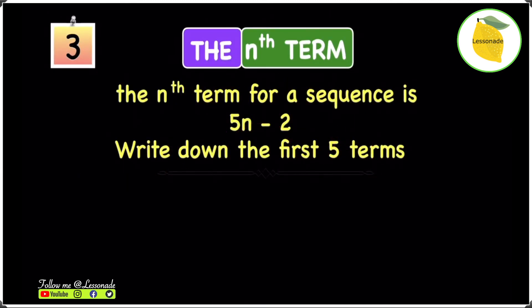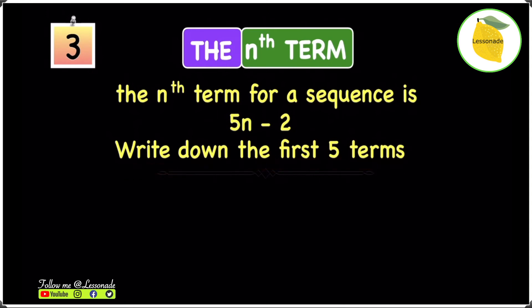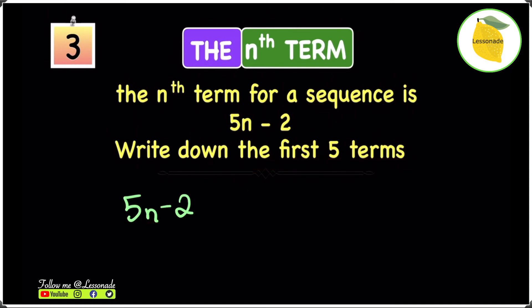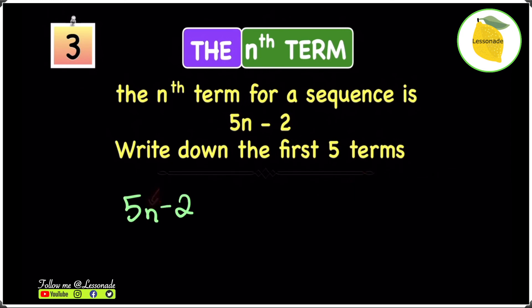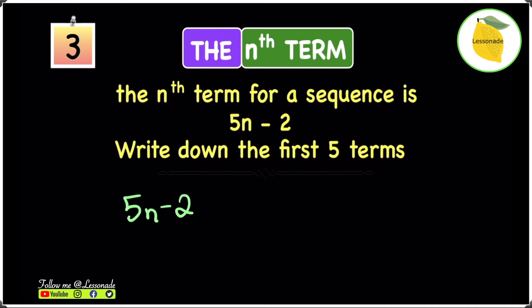Now let's look at a different type of example. The nth term for a sequence is 5n minus 2 — write down the first five terms. We need to substitute n = 1, 2, 3, 4, and 5 into the formula. For n = 1: 5 times 1 minus 2 equals 3. For n = 2: 5 times 2 minus 2, so 10 minus 2 equals 8.